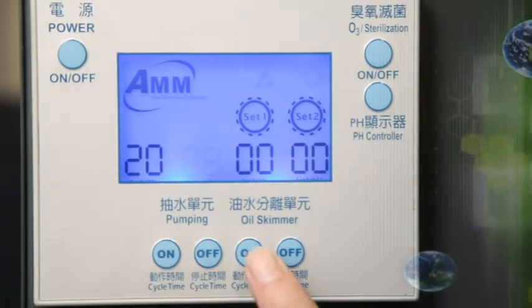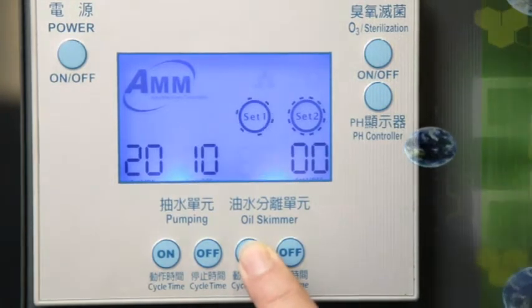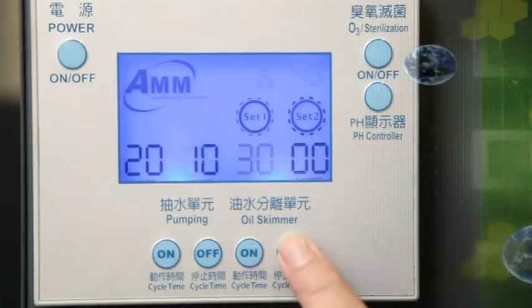Oil skimmer unit. Action time, 30 minutes. Stopping time, 10 minutes.